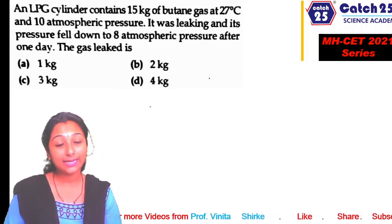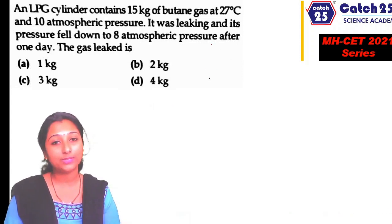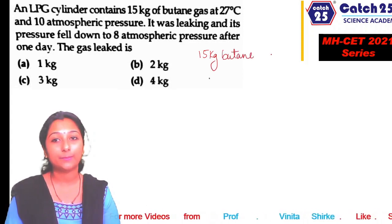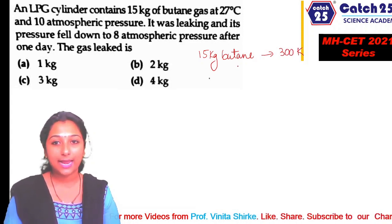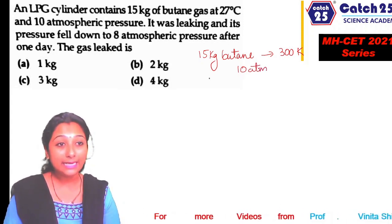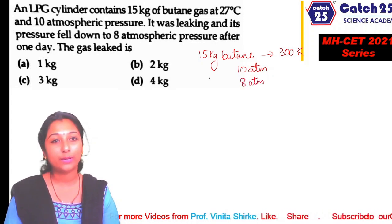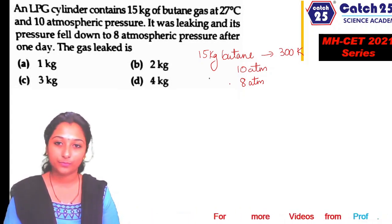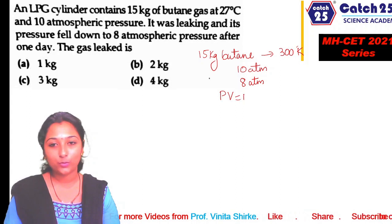First question: An LPG gas cylinder contains 15 kg butane gas at 300 Kelvin (27 degrees Celsius) and pressure of 10 atmosphere. It was leaking and pressure fell down to 8 atmosphere after one day. How much gas leaked? Temperature is constant, so we use PV = nRT.